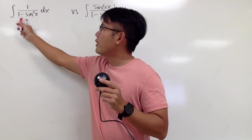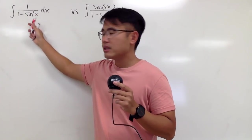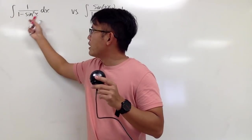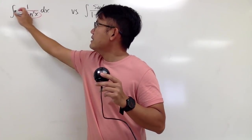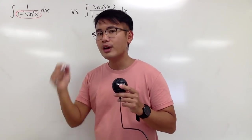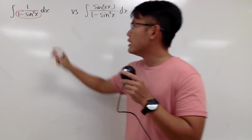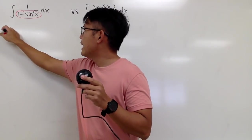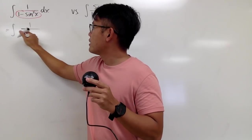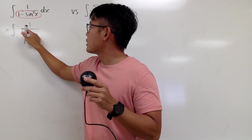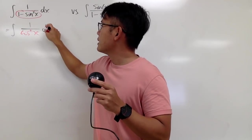You see, we have 1 over 1 minus sine squared x. This right here, we actually recognize as cosine squared x. So I can write this down as the integral of 1 over cosine squared x, dx.